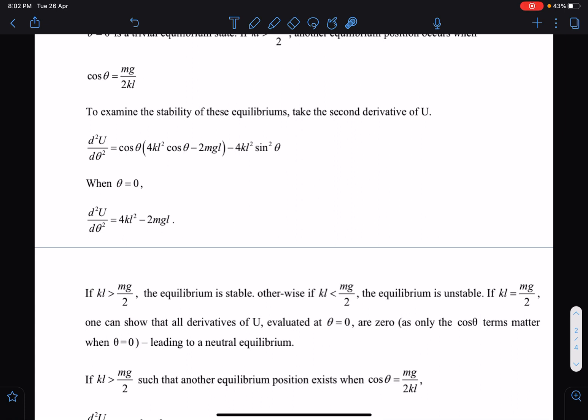That means 4kl², here I can say this 4kl² must be greater than 2mg l, which is kl is greater than mg/2, so equilibrium is stable, otherwise unstable for theta equal to 0. And if mg is equal to 2kl, then it becomes neutral equilibrium for theta equal to 0.